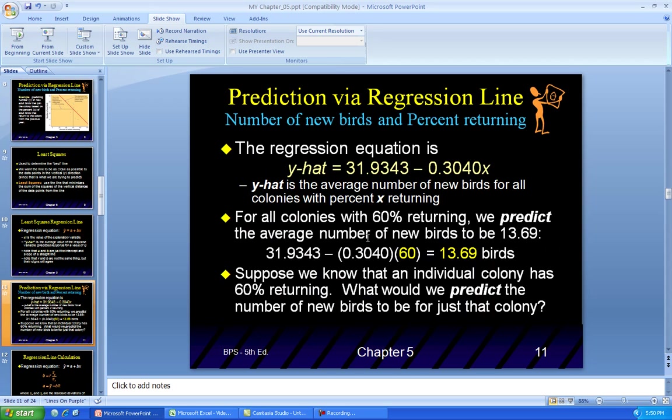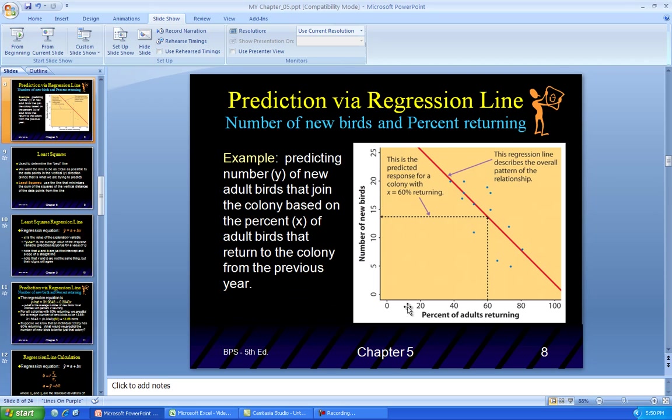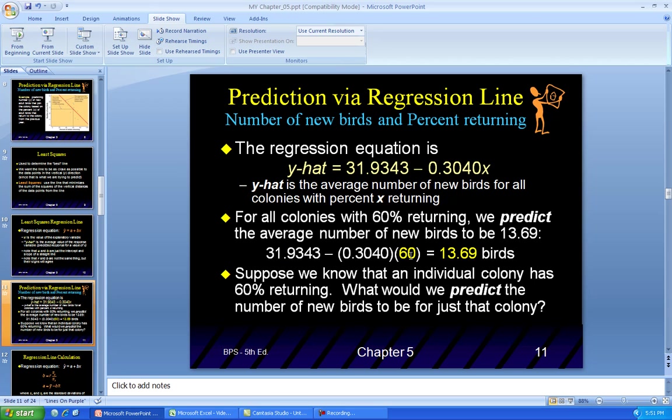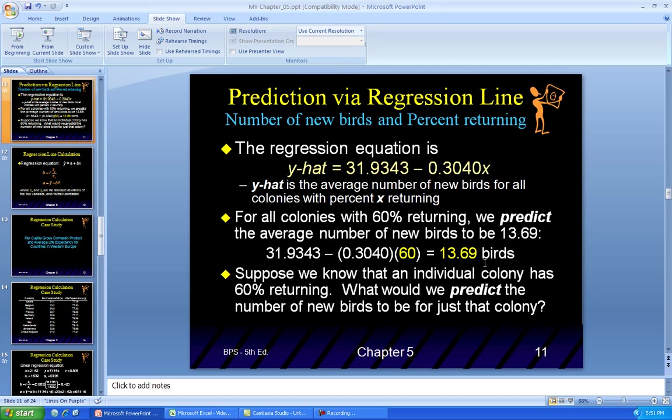So when they do 60%, remember I said 60, it looks like it's a little less than 15 here. What is that exact number? Well, if you put in 60 for x, let's go back to the graph. 60 is here. That's the x-axis. That's the explanatory variable or the independent variable. The number of new birds is dependent on the percent of adults returning. Think about it. If you don't have a lot of adults returning, you may not have a lot of new birds. But let's see what happens. So going back to this equation, with 60 returning, we get 13.69 birds. Now you know you're not going to get 13.69. So you might want to round that off. You might get 13 birds, not close to 14. So that's what we use the equation line for.